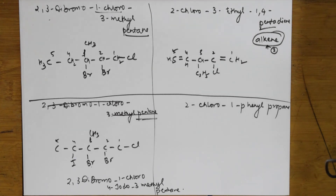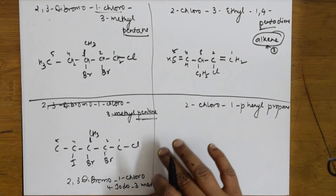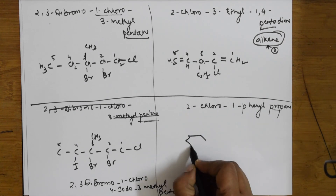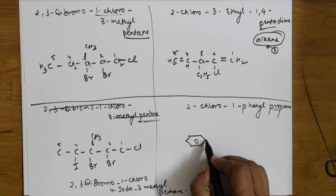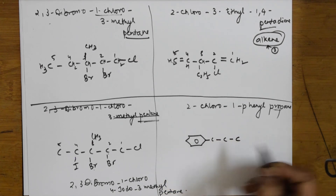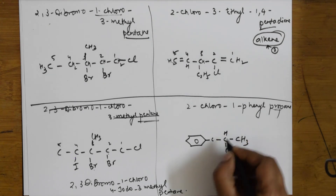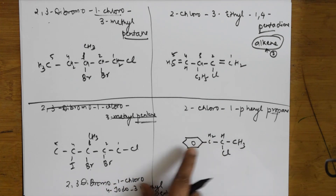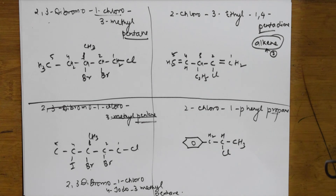One more example: 2-chloro-1-phenylpropane. The parent chain is propane: one, two, three. At carbon one there is a phenyl group — that is a benzene ring. At carbon two there is chloro. Fill hydrogens: CH₃, CH, CH₂. This is 2-chloro-1-phenylpropane. Done — let us come back with more examples.